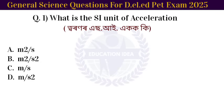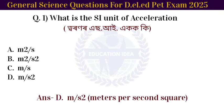First question: what is the SI unit of acceleration? The answer is 1 meter per second square.